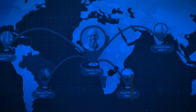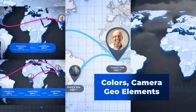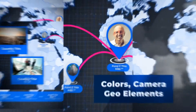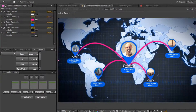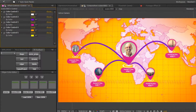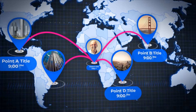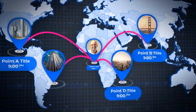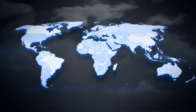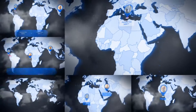Working with the project is easy because the project contains three types of settings. The first type allows you to customize the colors of the map individually for your design. The second type adjusts the position of geo marks and routes on the map. The third type is to control camera movement over the map, so you can come closer to any point with ease.